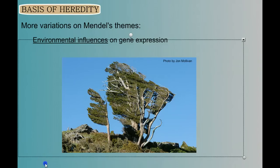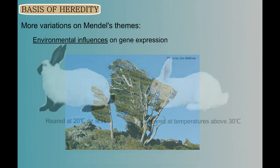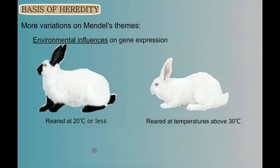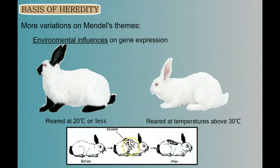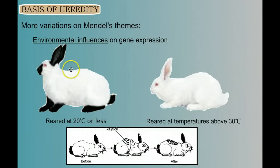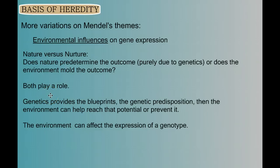Here we see a tree in Hawaii that has been shaped by a constant wind from the south over its entire life. Certainly, the genes for this tree did not dictate that branches would only grow on one side — it's being influenced by environmental pressure. And here we see how Himalayan rabbits' coloration is influenced by temperature. You can shave the fur off the back of one of these rabbits, strap an ice pack to them, and the fur that grows back underneath the ice pack will grow back dark in color. Where the body temperature is cooler, dark color is expressed; where it is warmer, the dark color is not expressed. While genes give us the blueprint and the genetic predisposition for traits, the environment can and does shape expression.